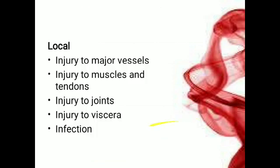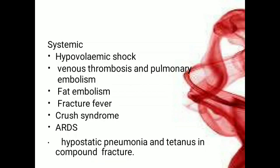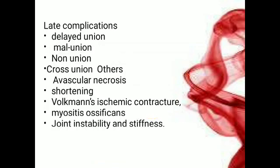Complications of fractures can be systemic or local. Local complications include injury to major vessels, muscles and tendons, joints, viscera, or infection. Systemic complications include hypovolemic shock, fat embolism, fracture fever, crush syndrome, venous thrombosis, pulmonary embolism, and ARDS. Late complications — which are very important — include delayed union, mal-union, non-union, and cross union.